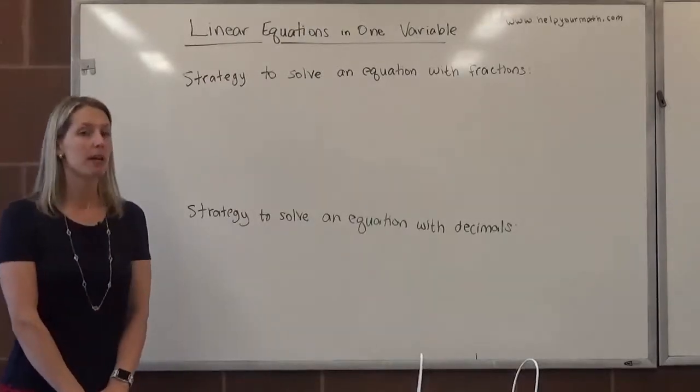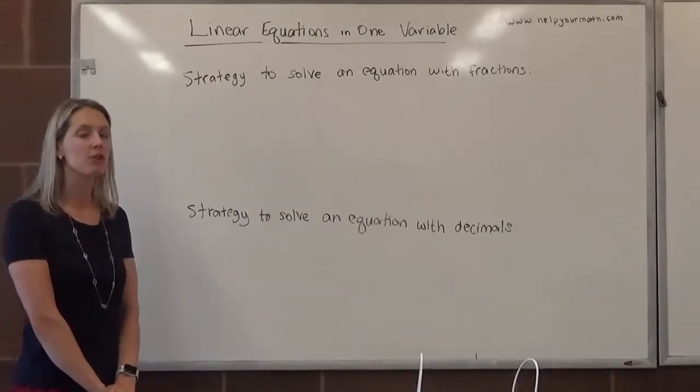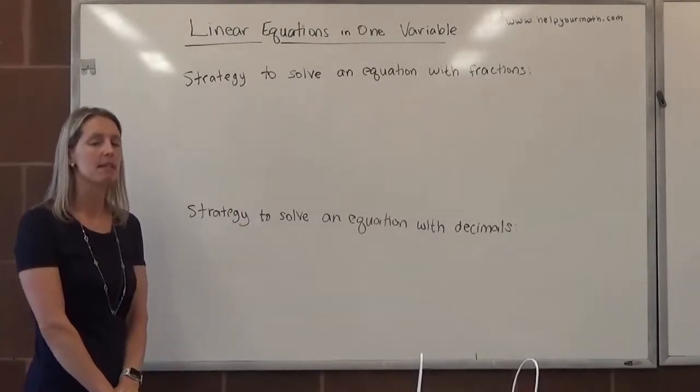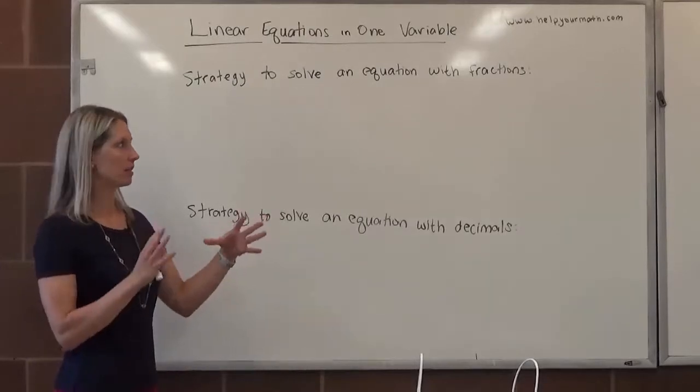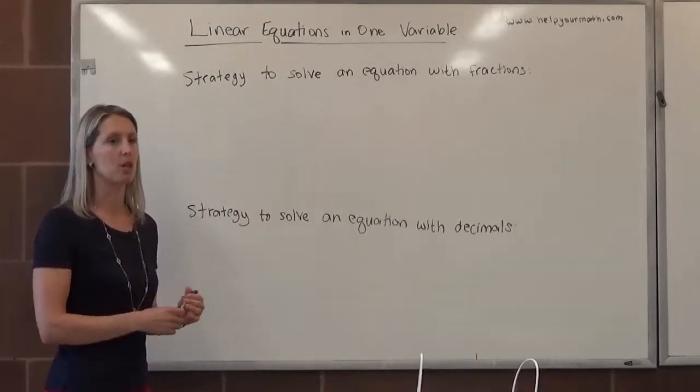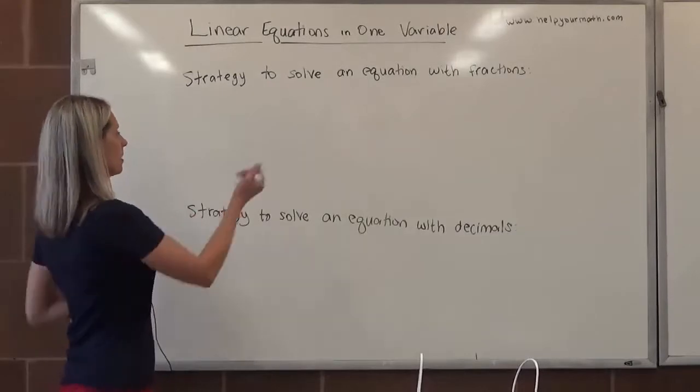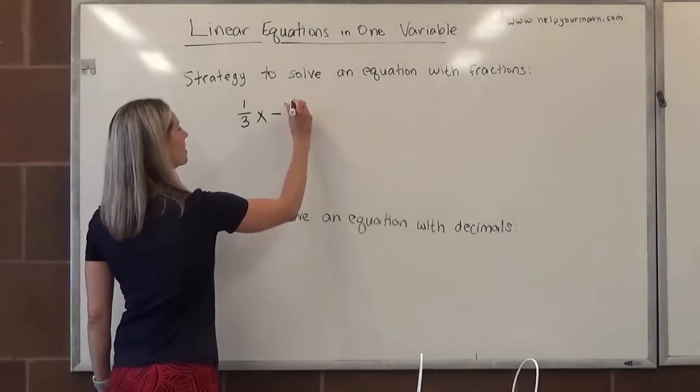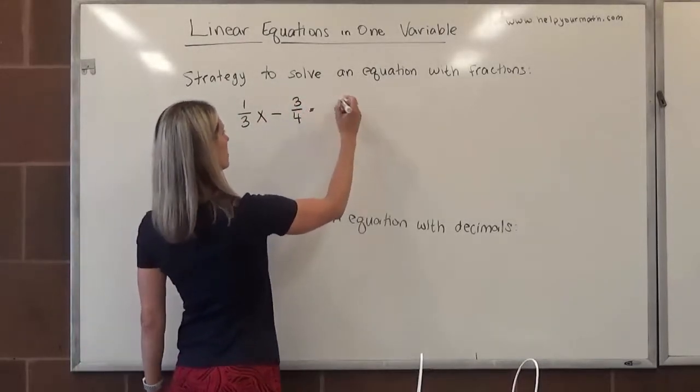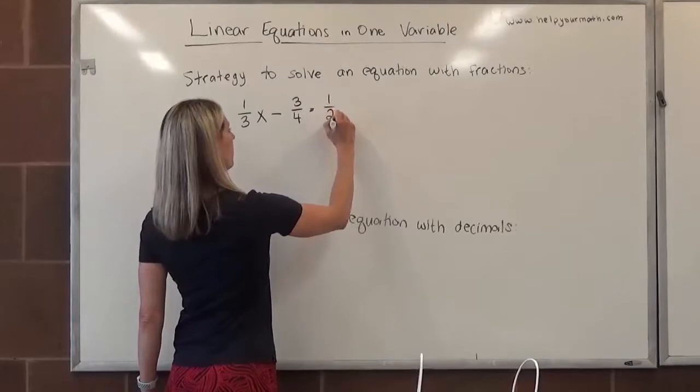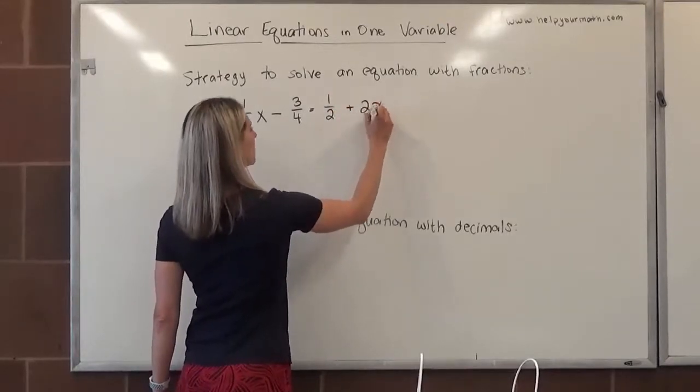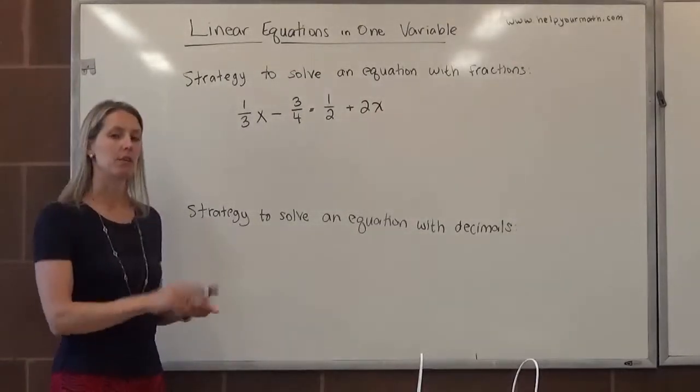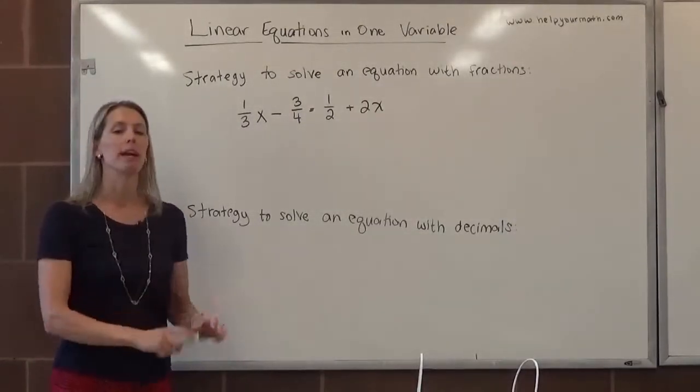We're going to start with the fractions. They're not scary. If we have fractions in an equation, we can actually multiply every term by the least common denominator. The least common denominator is the smallest value that any one of the given denominators goes into. Let's put an example up here. If we have 1/3 x minus 3/4 equals 1/2 plus 2x, we have three fractions: one has a denominator of 3, one has a denominator of 4, and one has a denominator of 2.